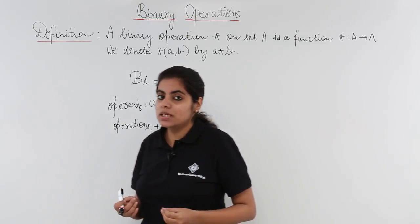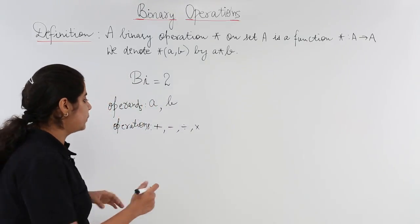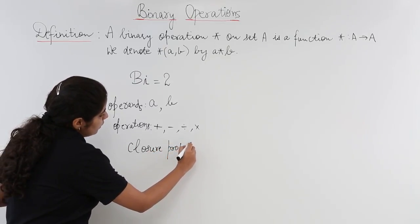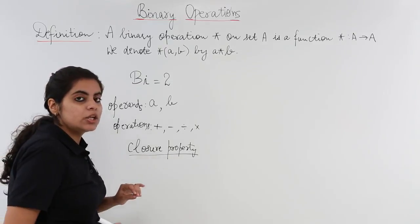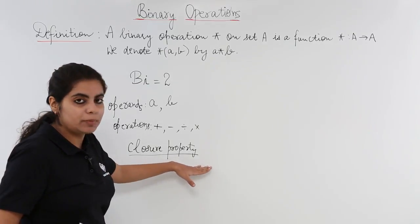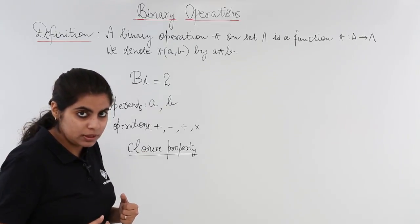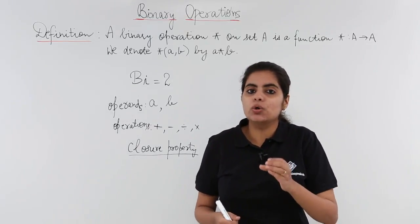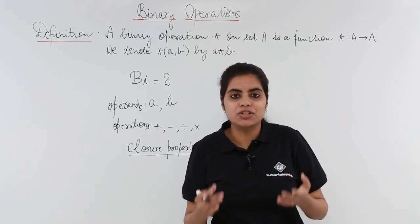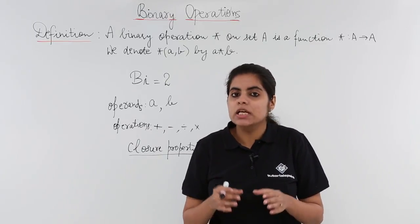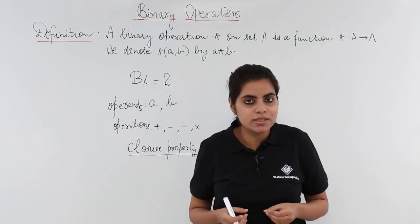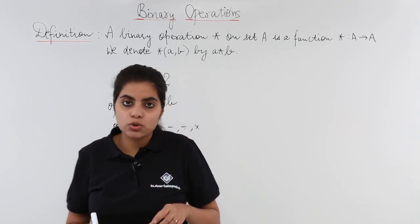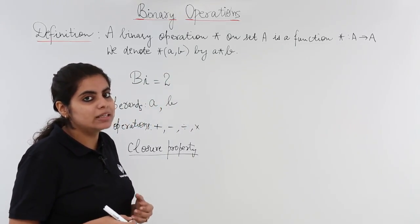Let's see how to relate a new property called closure property to binary operations. What do we mean by closure property? It will tell me what operations are closed on real numbers, natural numbers, and so on. Let's get started with what is closure property and how we relate it to binary operations.